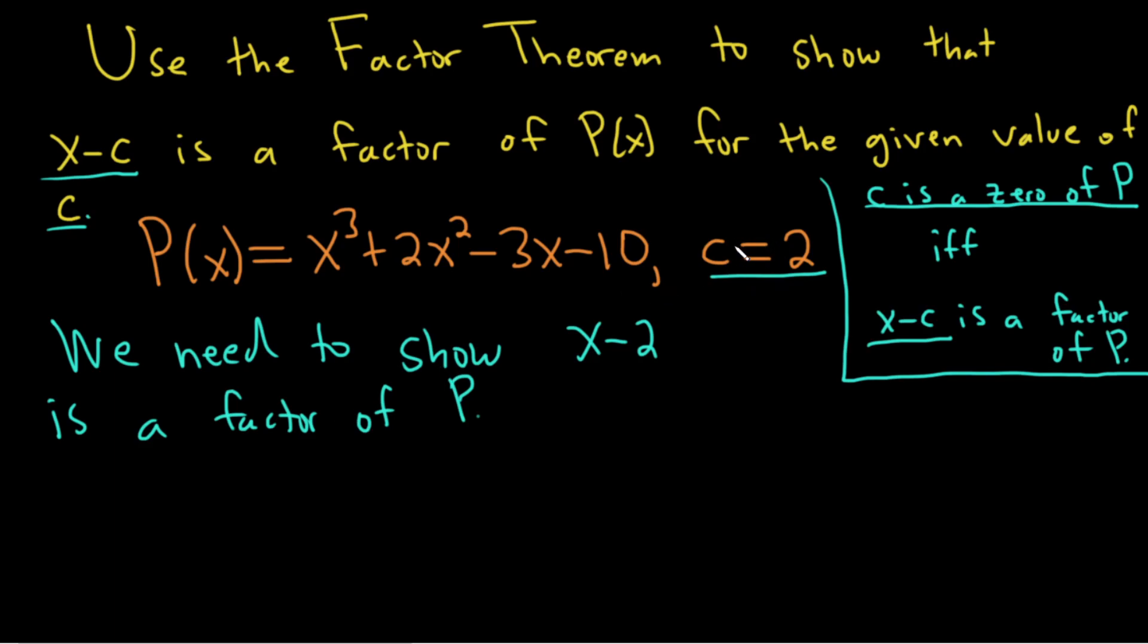What does that mean? A 0 of a polynomial is a number that when you plug it into your polynomial, you're going to get 0. So all we have to do is compute P of 2, just plug in the 2 into P.